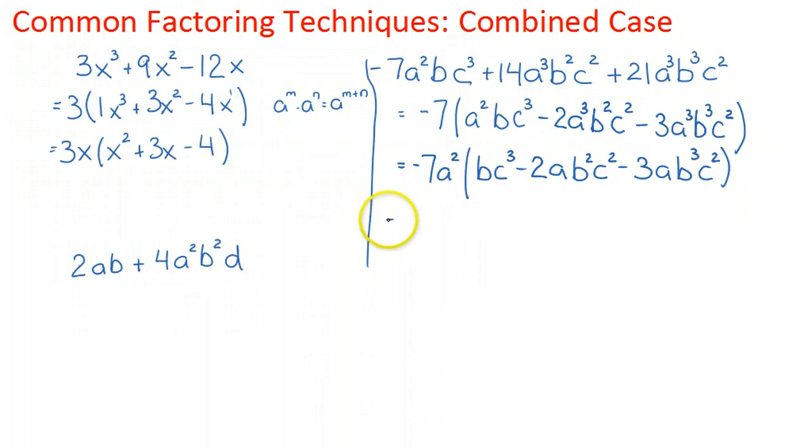Now I'm going to factor out b from each of the terms, so negative 7a²b. I'm going to get c³ minus 2abc² minus 3ab²c².